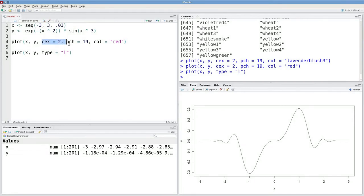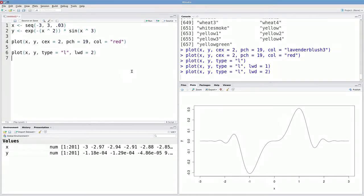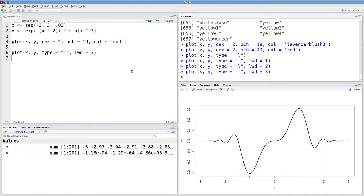So this will just give you a line plot with a black line. Let's go through the analogs for these arguments. So CEX changed the size of a point. To change the size of this line, we'll use the LWD argument, which stands for line width. Defaults to 1, 2 is twice as thick, 3 is 3 times as thick, and so on.